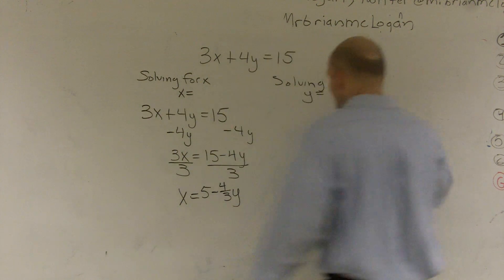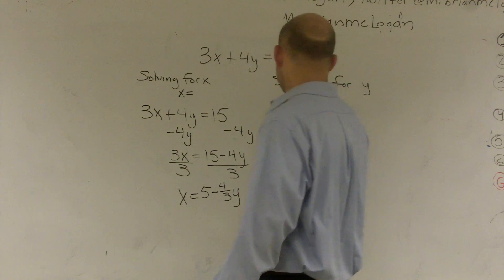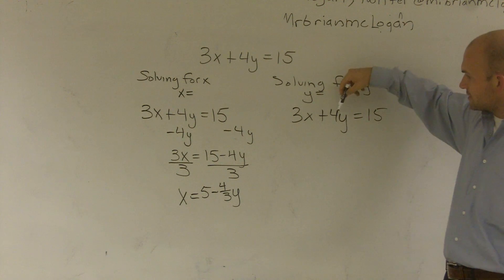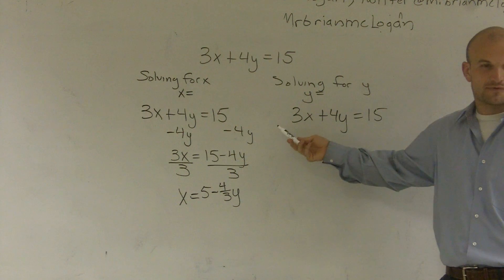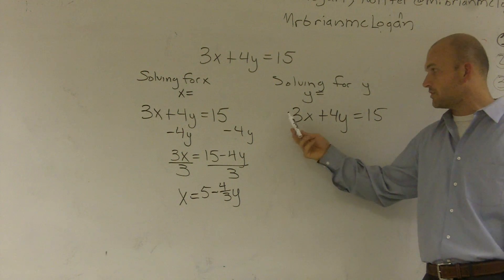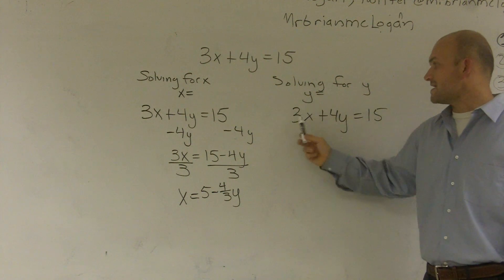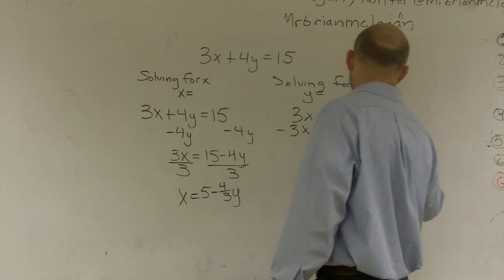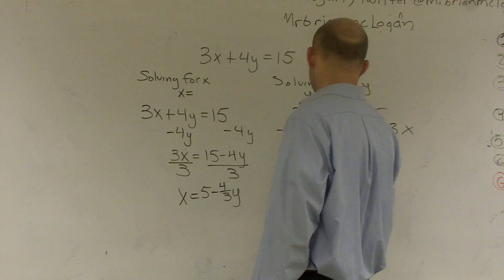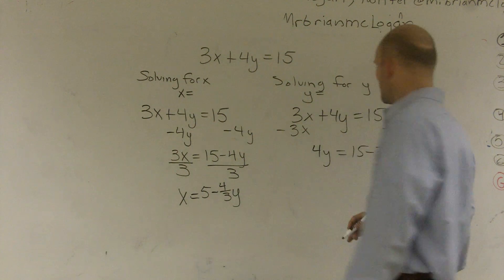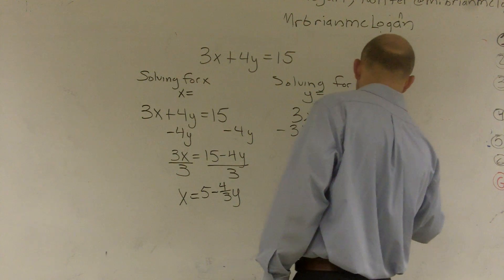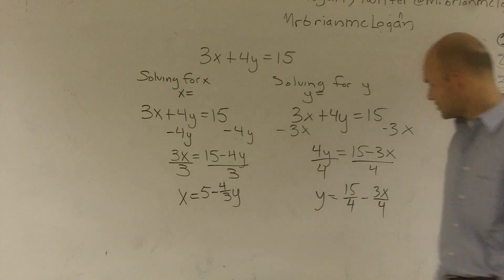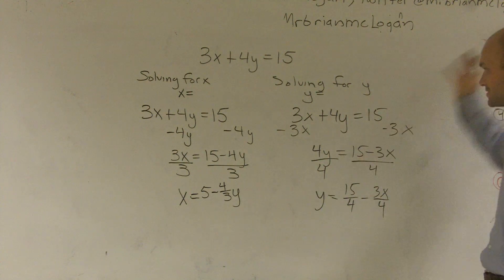Now, to solve for y — let's just rewrite the equation again. There's not too much of a difference because it's both addition. I notice I'm multiplying by 4 and adding 3x. That's a positive 3x, so to get rid of it, I need to subtract 3x. Therefore, I get 4y equals 15 minus 3x. Now I need to undo multiplication by division, and I'll separate it into two fractions. So that's how you solve for x, and that's how you solve for y.